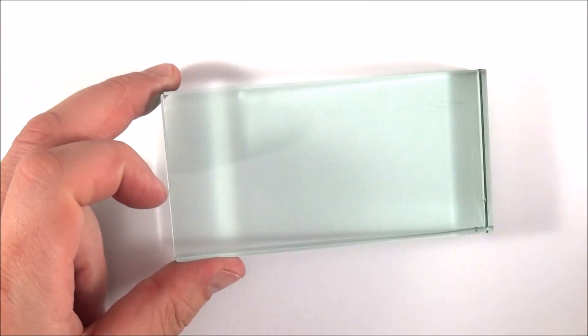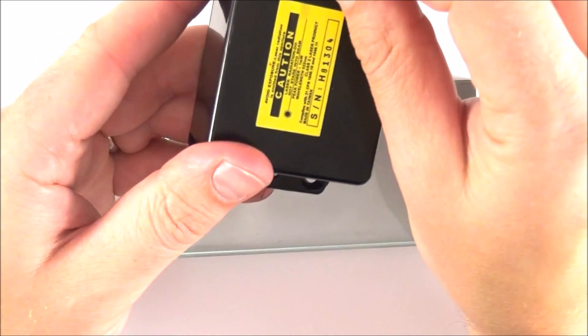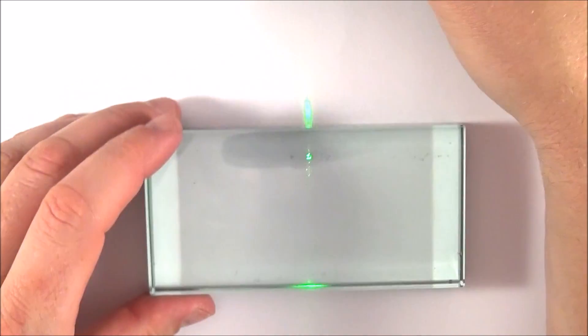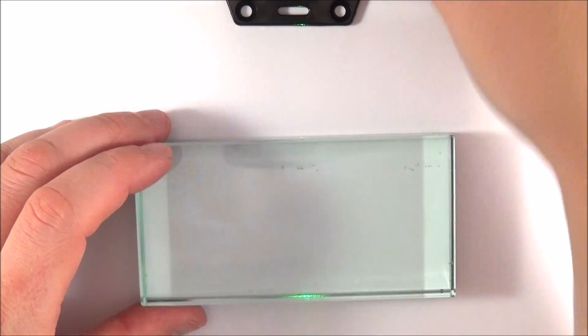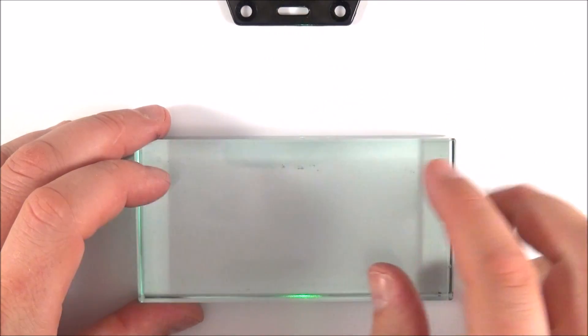So here I have a rectangular glass block and I also have a laser. What we're going to do is turn the laser light on and then shine this green laser light through the block at 90 degrees to the surface, so basically coming in at a normal.